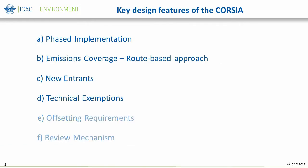There are six key design features of CORSIA. This presentation will focus on the first four design features, which are phased implementation, emissions coverage through a route-based approach, new entrants, and technical exemptions. The remaining two design features — offsetting requirements and review mechanism — will be discussed in a subsequent presentation.